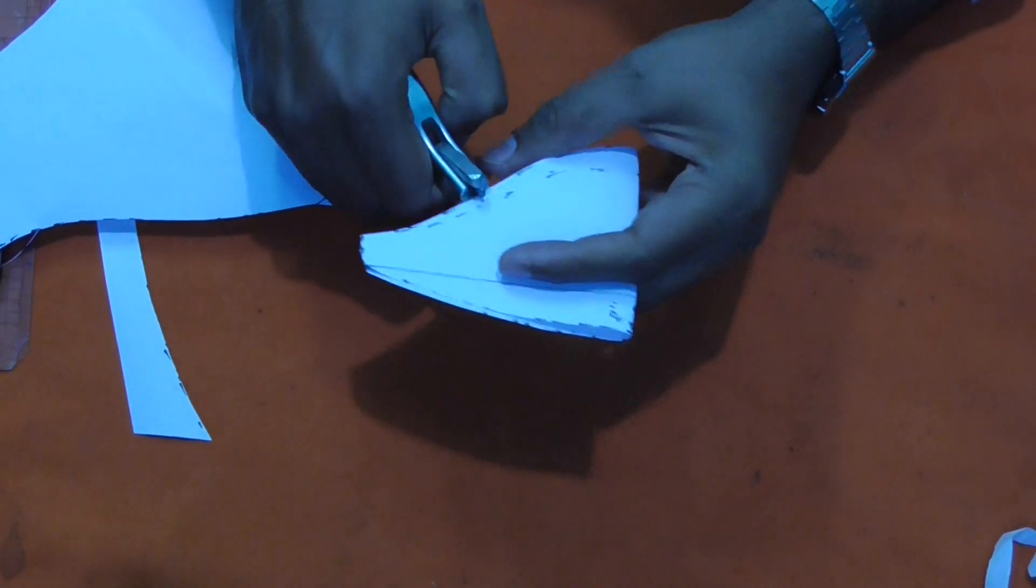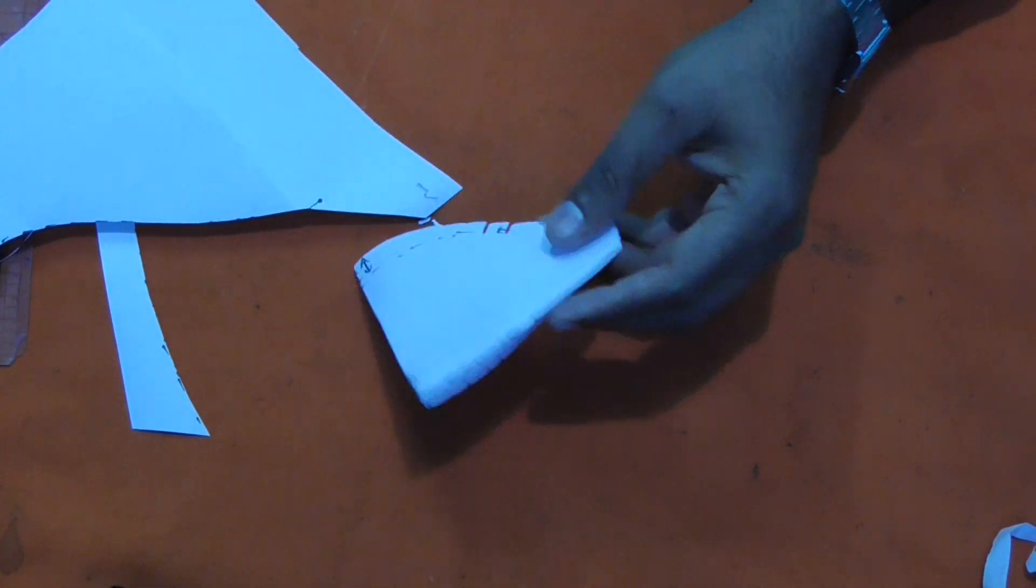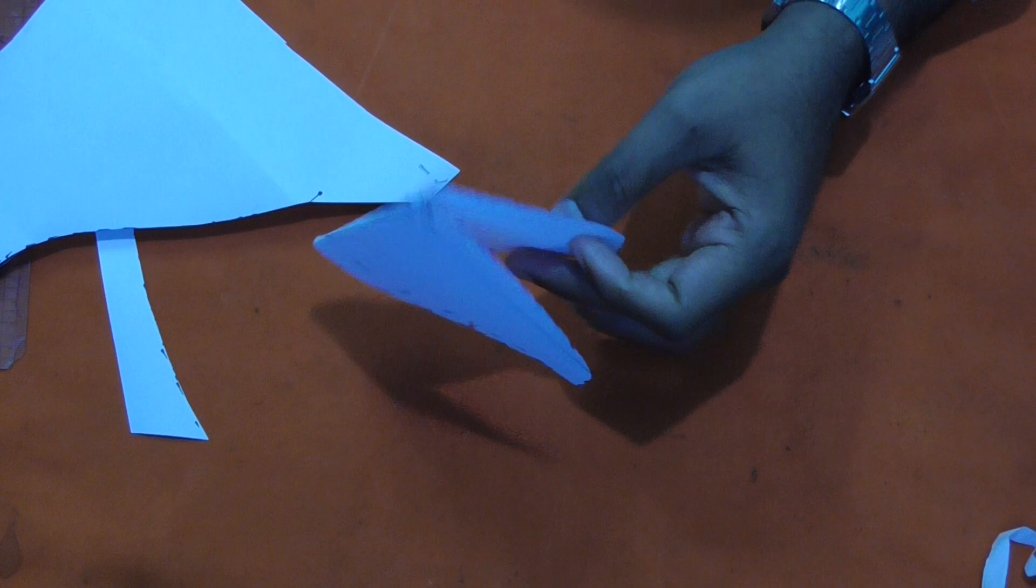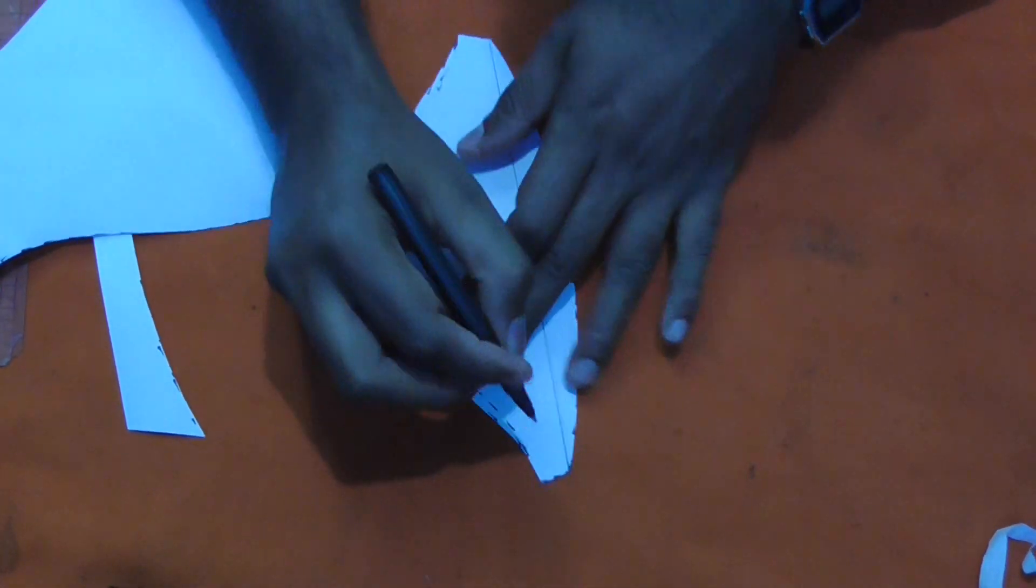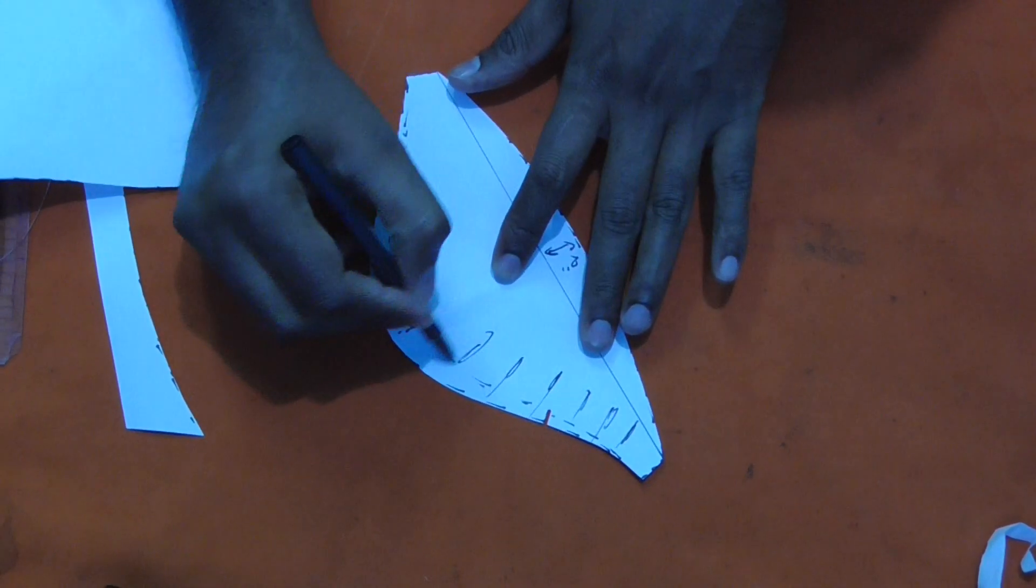I mentioned the notch: one in the front, two in the back. And gather both sides according to your armhole.